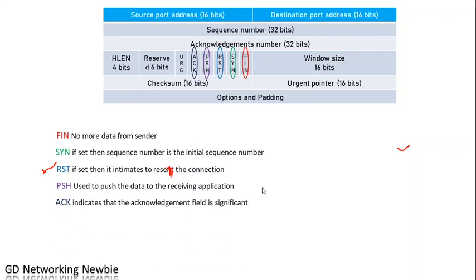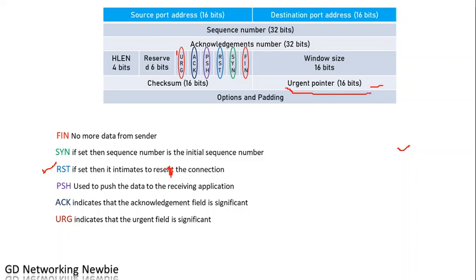The ACK field — acknowledgement — as discussed in the previous slide: when the ACK flag is set, this indicates that the acknowledgement field is significant, meaning you should look at the acknowledgement number. The URG (urgent) field indicates that the data pointed to by the urgent pointer has some significance. When you put a value of 1 in this field, it shows that we need to give importance to this part — the urgent pointer field of the TCP segment header.